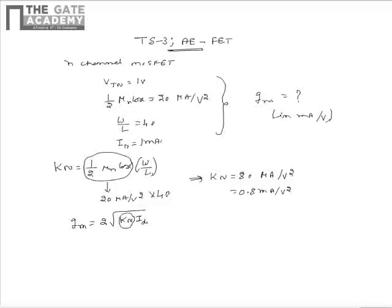Here we know that the term KN is equal to 0.8 milliampere per volt squared. We also know that the current ID, that is the drain current, is equal to 1 milliampere. So upon substitution, this is equal to 2 times square root of 0.8 milliampere per volt squared multiplied by 1 milliampere.